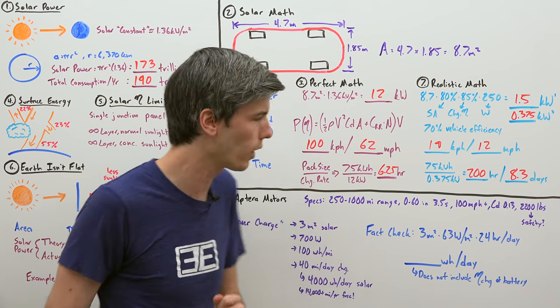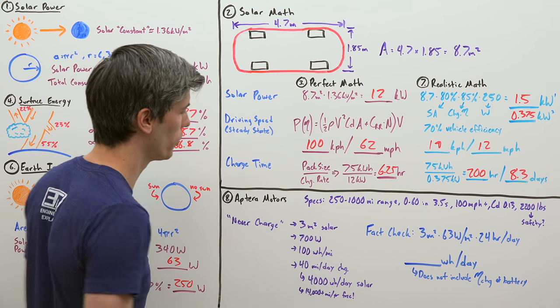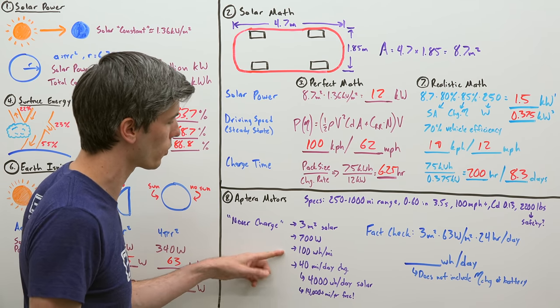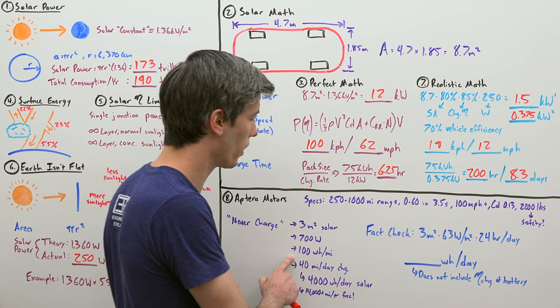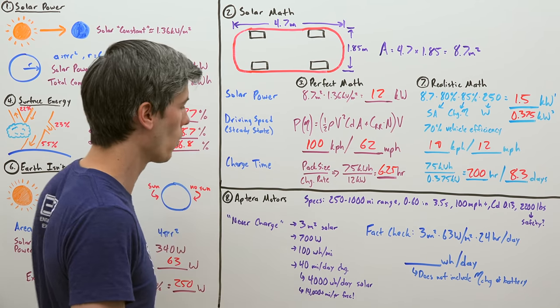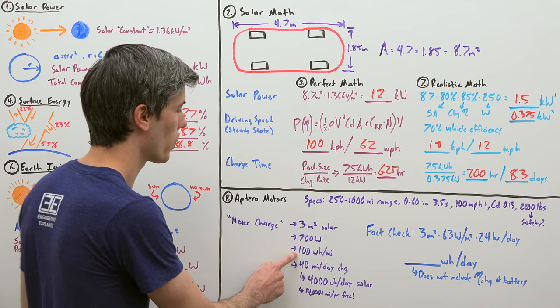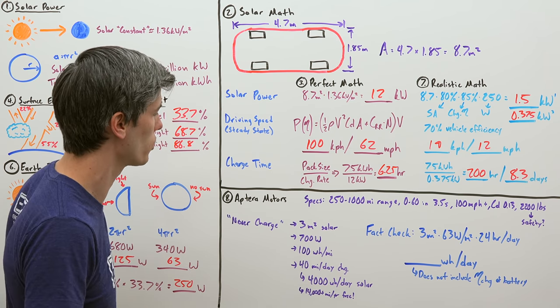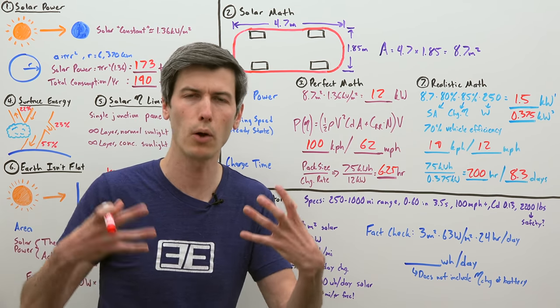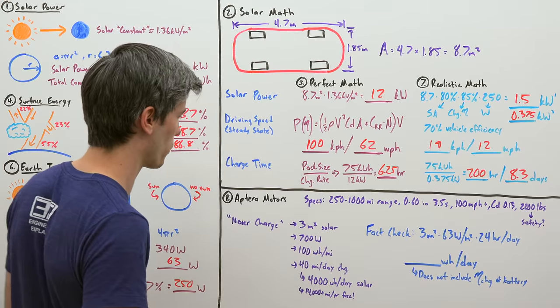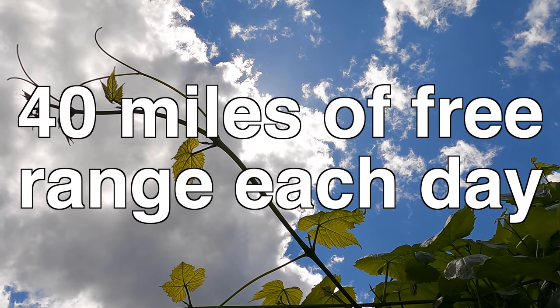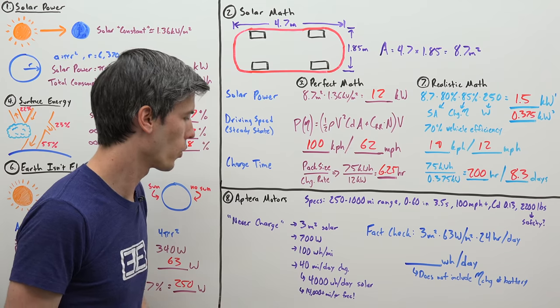So what's the theory behind this never charge? Well, they say they have three square meters of solar panels on the car. Good for up to 700 watts. And the real kicker of why this is possible is they say their driving efficiency is about 100 watt hours per mile. Now on a Tesla, that number on a Model 3 is maybe 250 watt hours per mile. So we're talking significantly more efficient, two to three times more efficient as far as driving down the road versus a Tesla because it has a small frontal area, low drag coefficient.